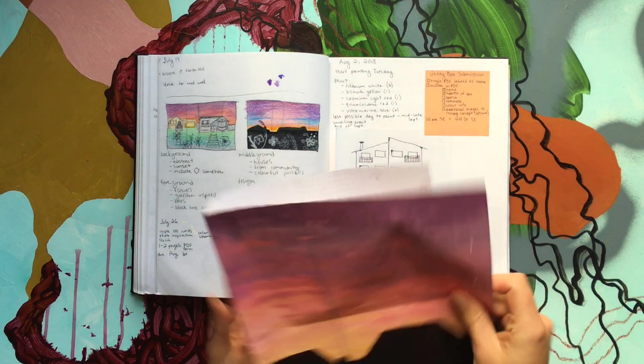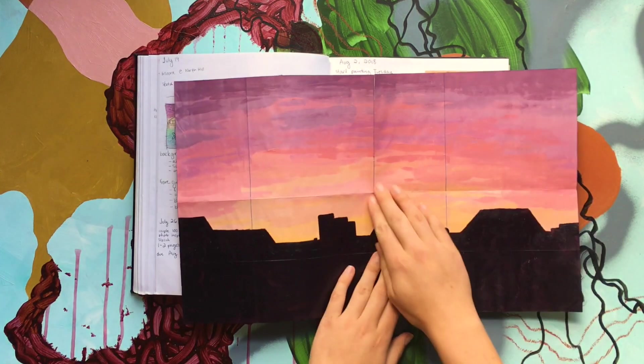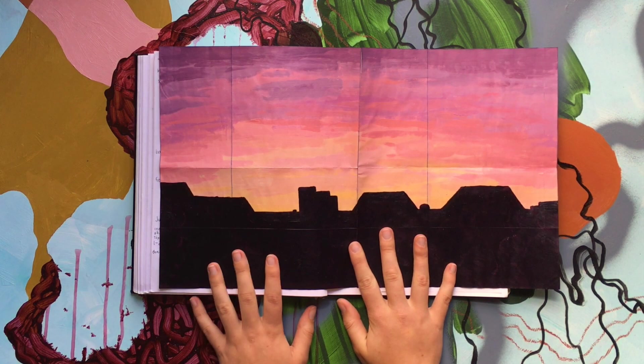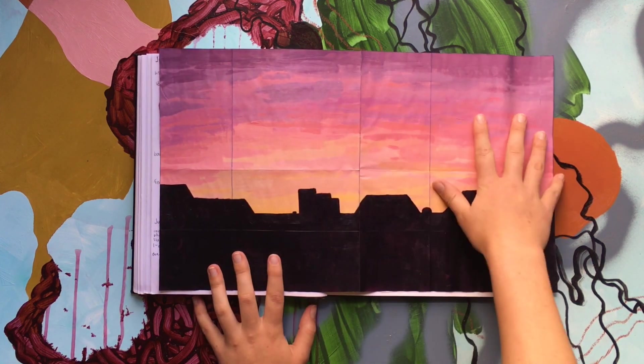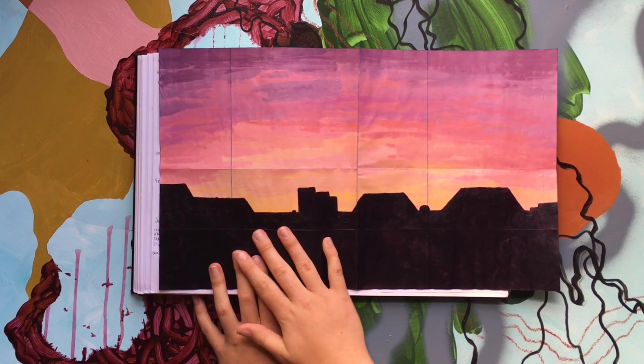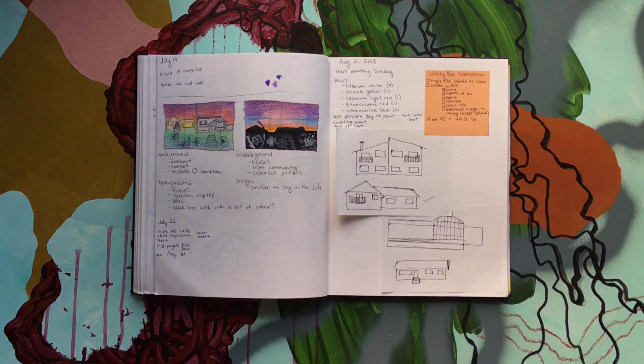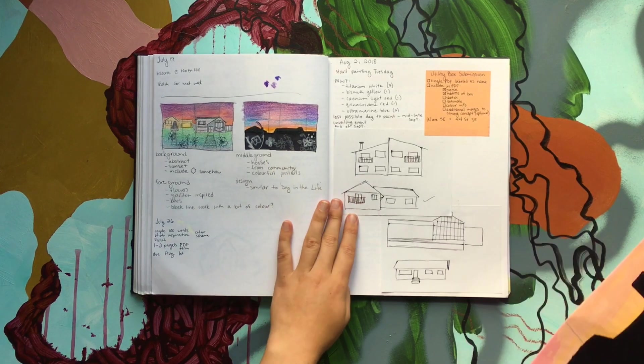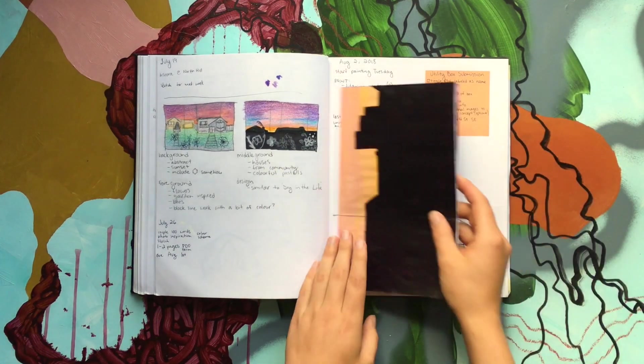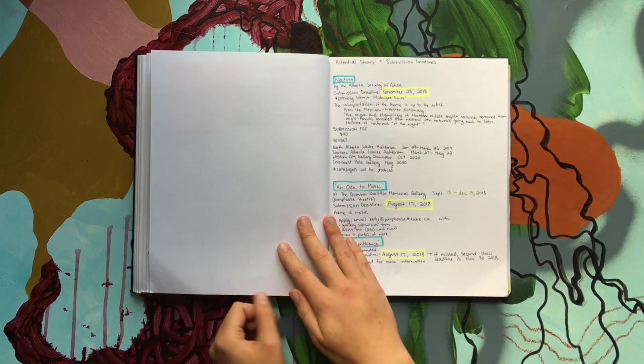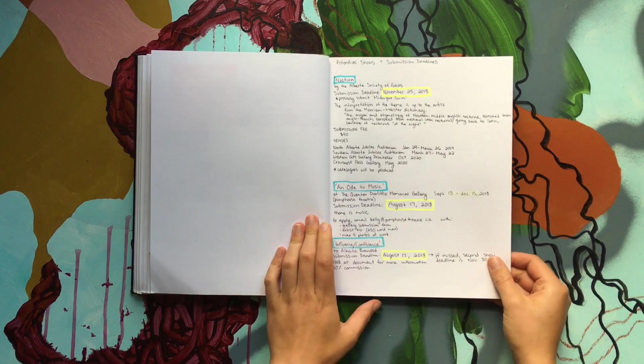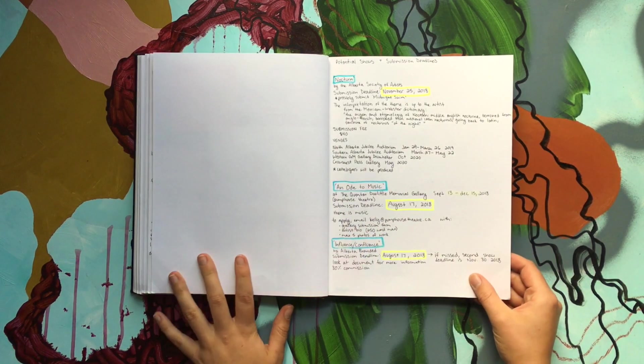I think this was kind of like what the original idea was. It shifted a little bit, but the background was supposed to be sunset, and then kind of like a shadow of rooftops. And then I did some white flowers over top, kind of like that. So those were the houses I went around and looked at.